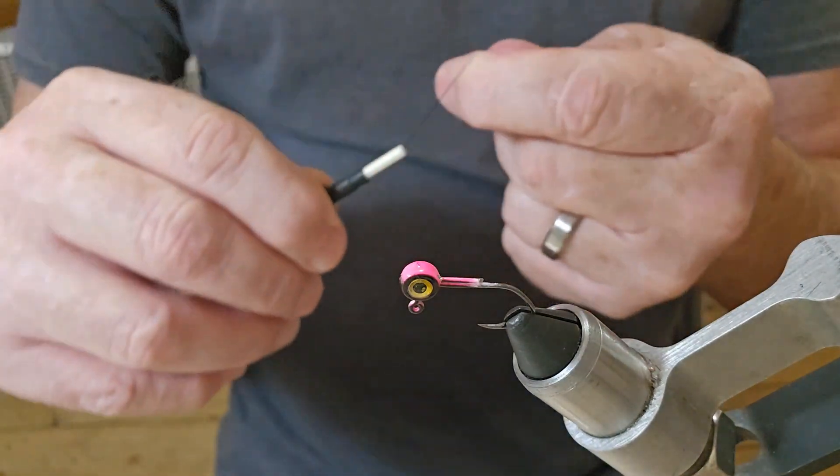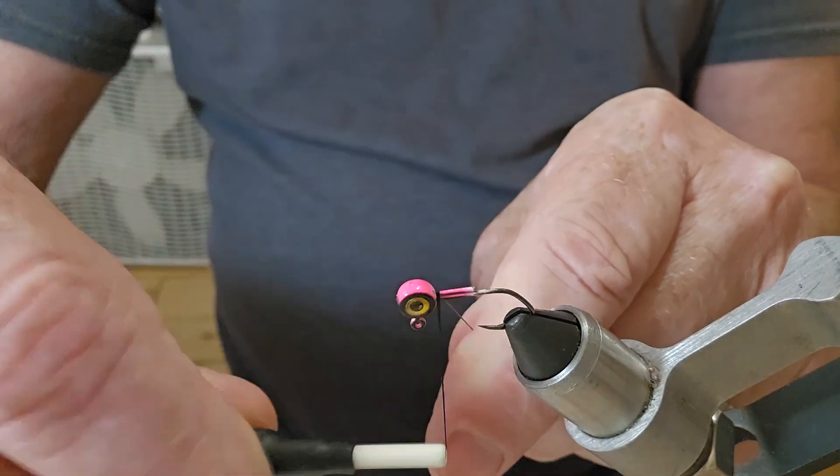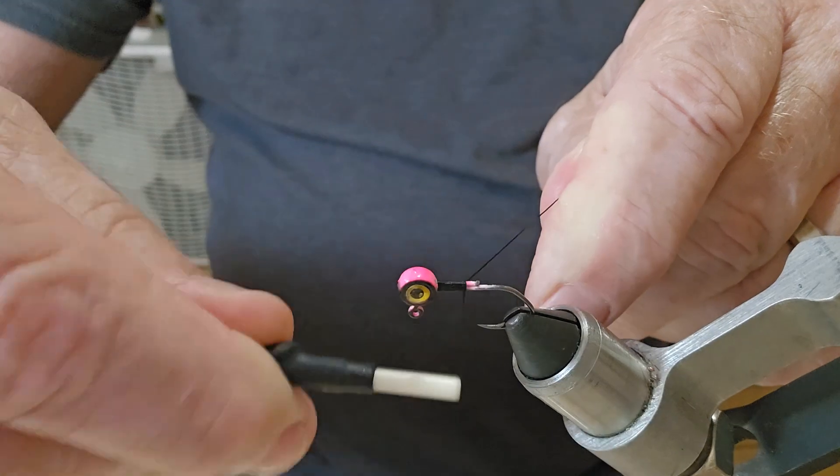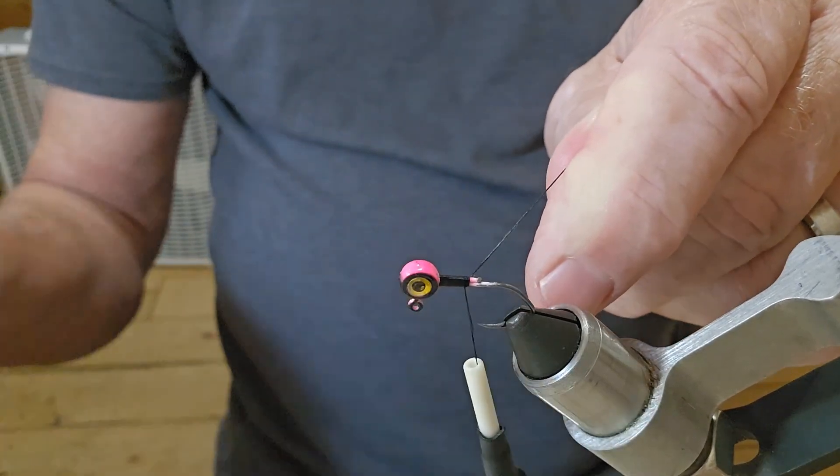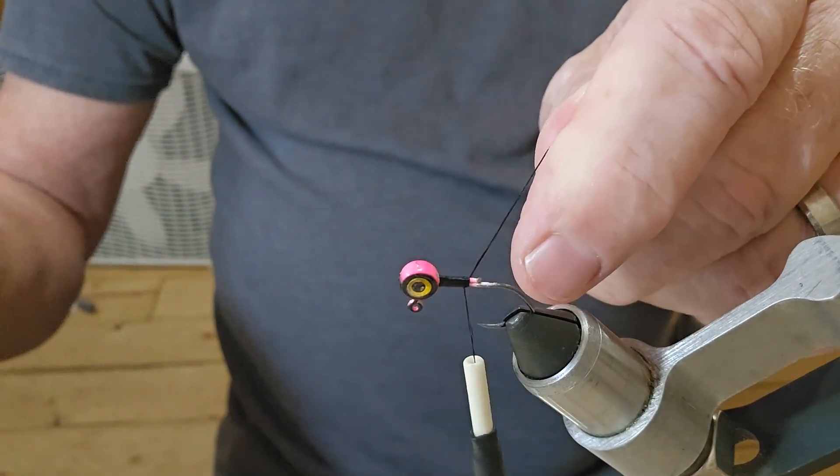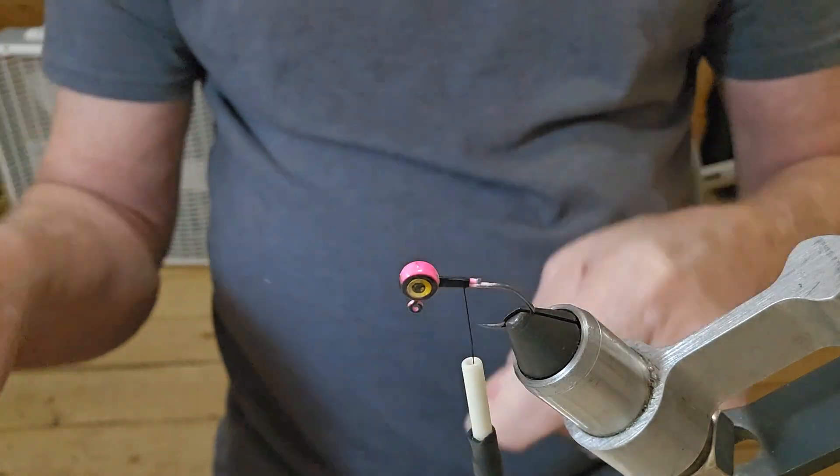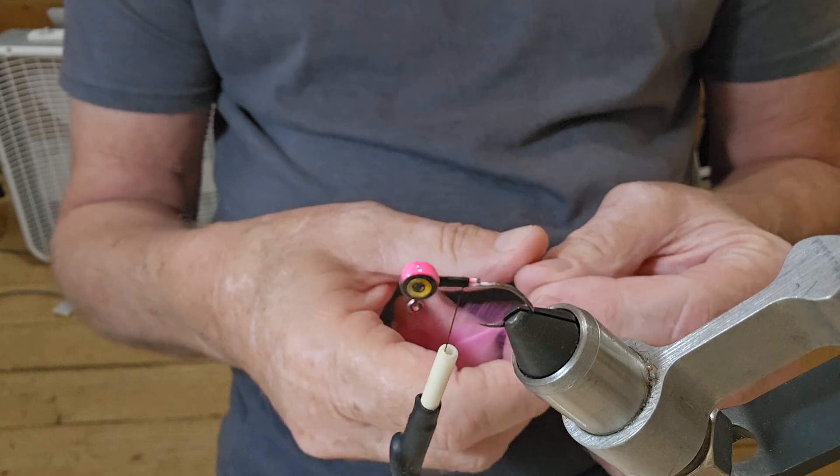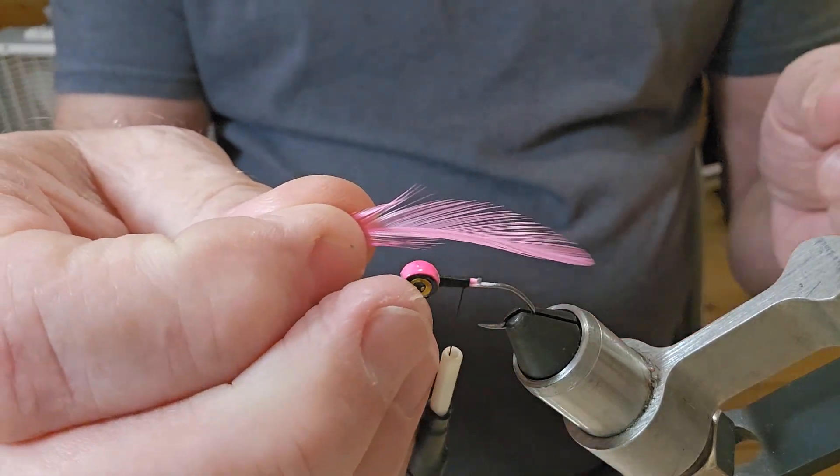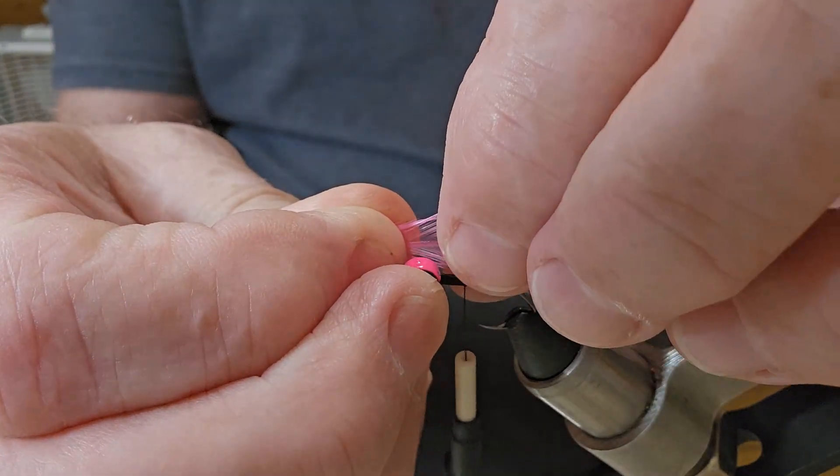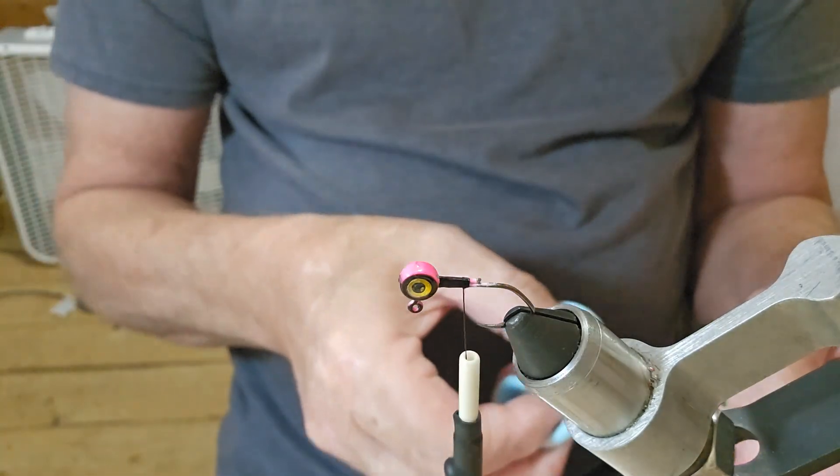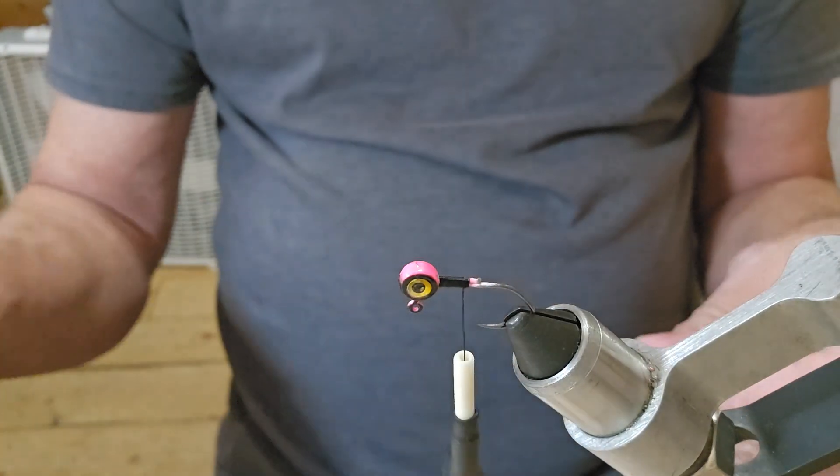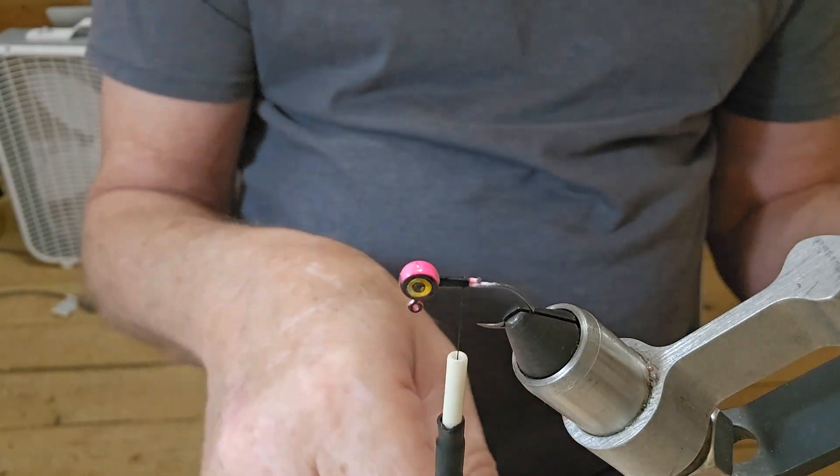So let's go ahead and get us some thread. I'm just gonna tie this back about halfway to the hook tip. I've got some hackle feather, so let's go ahead and get it measured off. I've got some pink and black, just trying to match it up with the jig head.